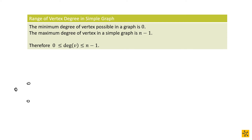Let's have a look at that. If we have a graph with three vertices v1, v2, v3 — what is the minimum number of degrees a vertex can have? That's really basic: it can be an isolated vertex, so it has a possibility of a degree equal to zero. So the lowest range of vertex degree that any vertex in the graph can have is zero.